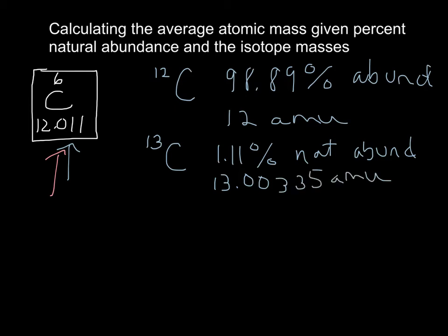All right, so now let's go ahead and write down the equation that we would use to get this weighted average of the naturally abundant carbon isotopes.